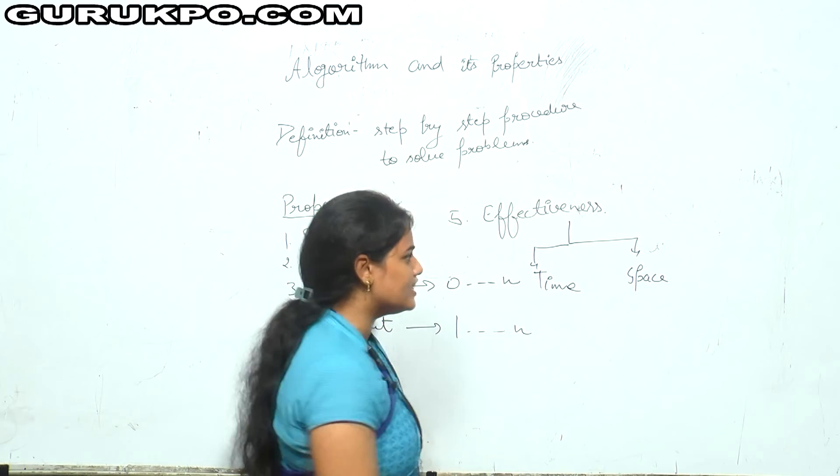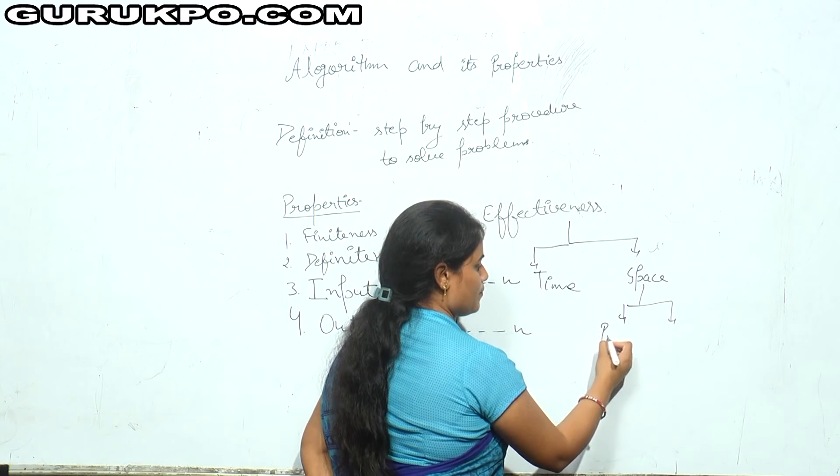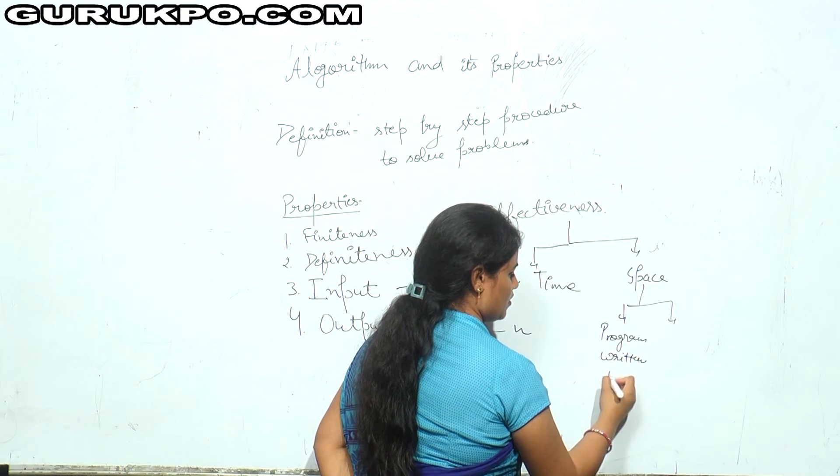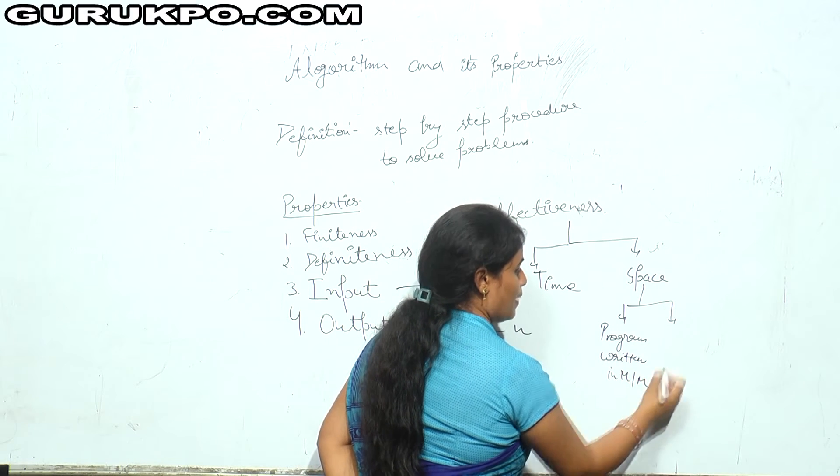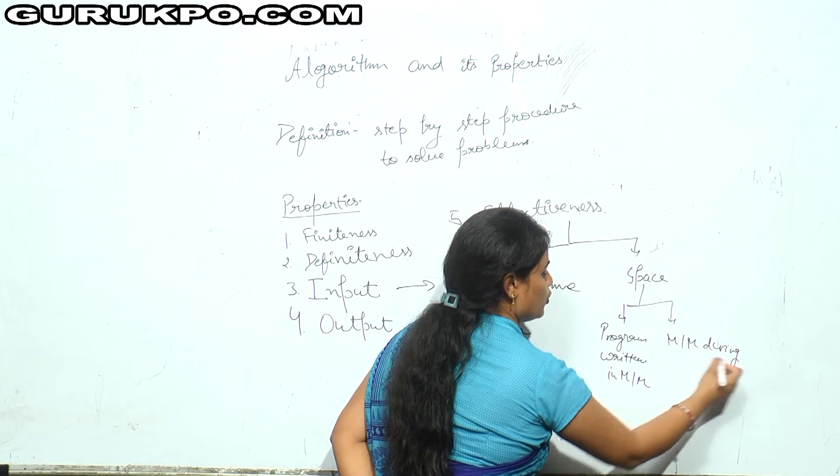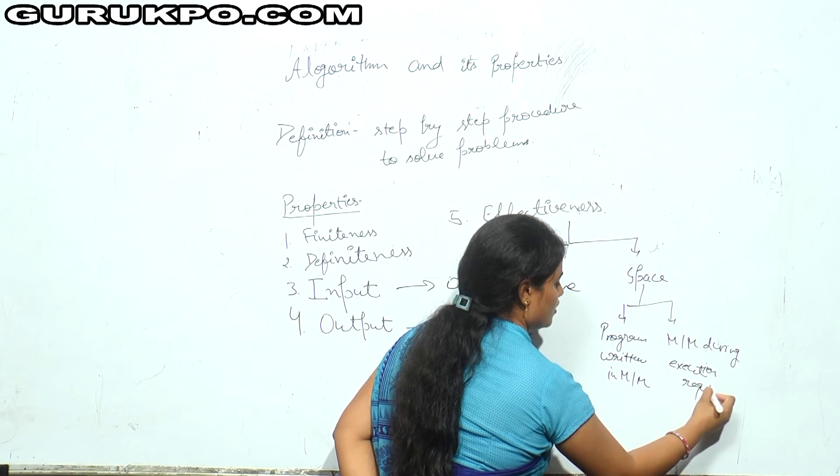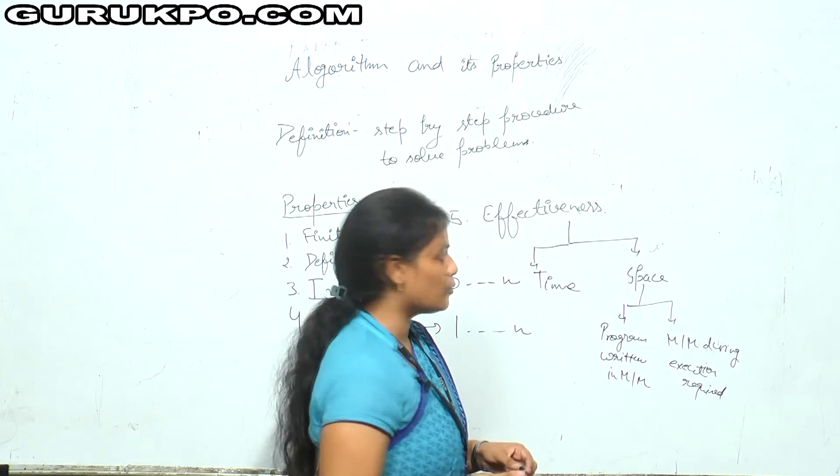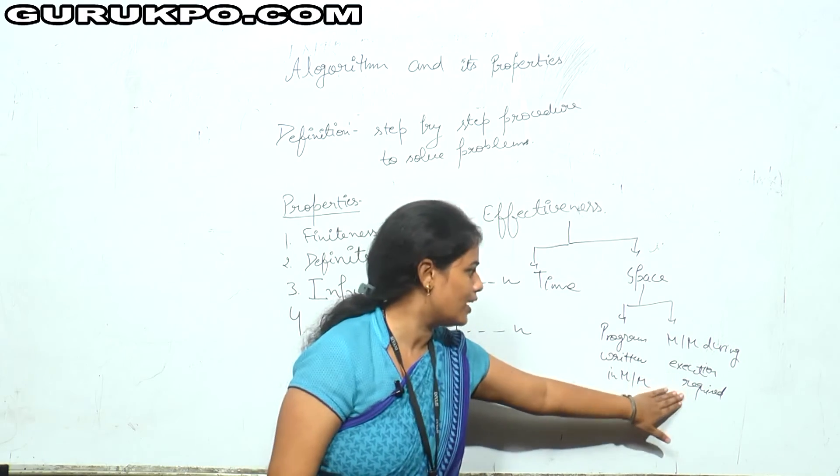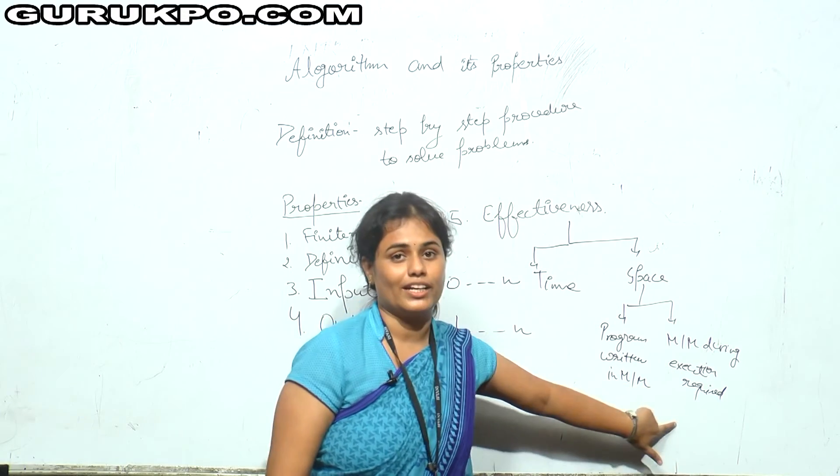This space is further categorized into the program written in memory and memory during execution required. This is the memory which we require. First of all, you write the program in memory. The memory space is required and you need to execute the program. Then some memory space is again required. Then the space can be categorized in two categories.